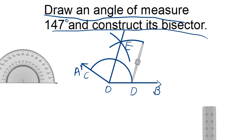If you want to check that it is really bisecting, then first of all we need to know the half of 147. So divided by 2, this will be 73.5 degrees.